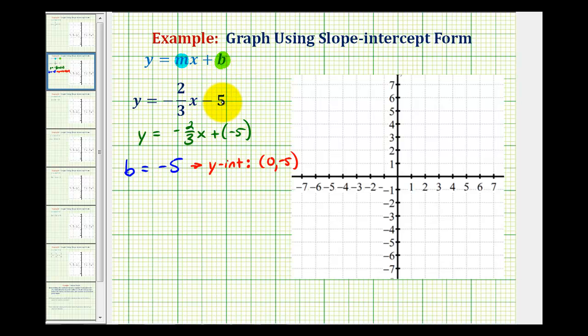But normally, if we see minus a constant, we'll just recognize that the y-intercept is going to be negative. And if we see plus a constant, we recognize the y-intercept would be positive.